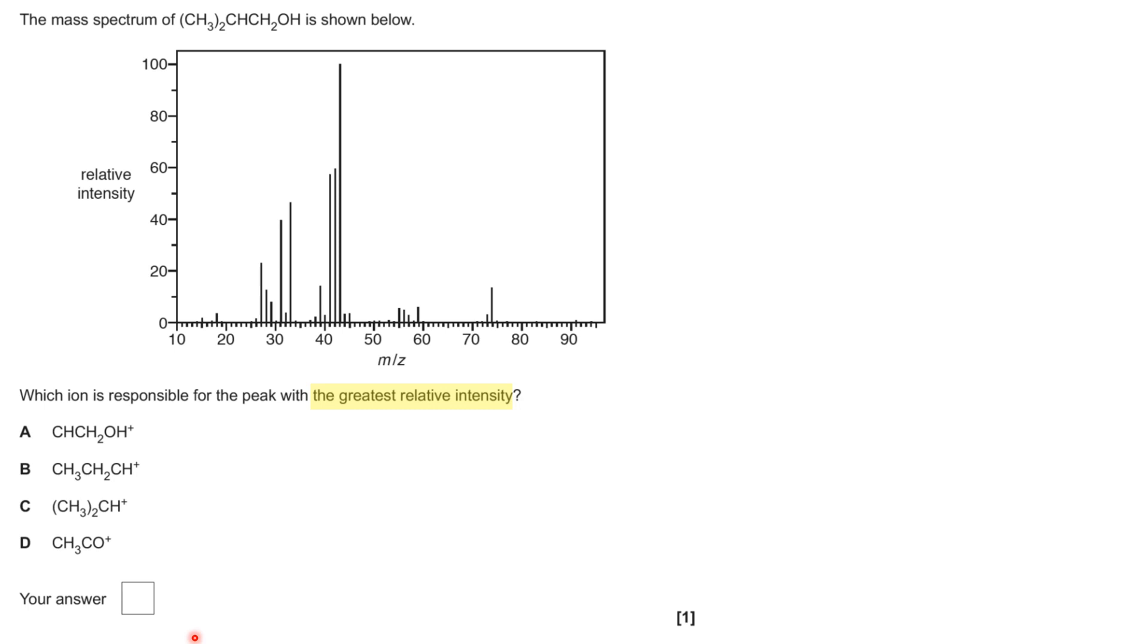So they want you to work out which ion is responsible for the peak with the greatest relative intensity. Obviously it's this peak I've just pointed an arrow at. So looking closely at the m/z value scale, you can see it's m/z equals 43.